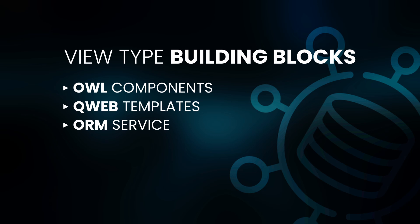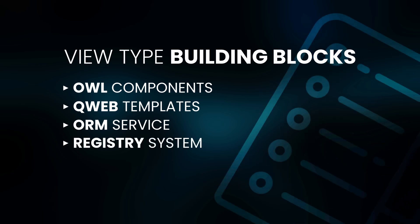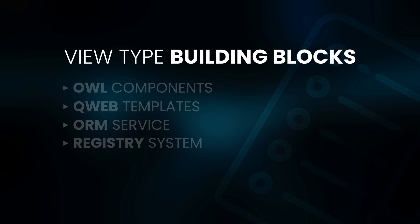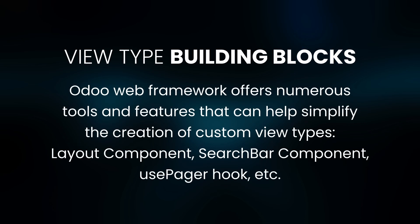ORM Service: Odoo's web framework provides an ORM service which has a similar API to its Python counterpart. This service is essential to retrieve and store data within the Odoo database. Registry: the registry key-value map stores various items such as parsers, formatters, fields, system tray items, services, actions, and others — including available view types. When creating new view types, they must be registered within this map.